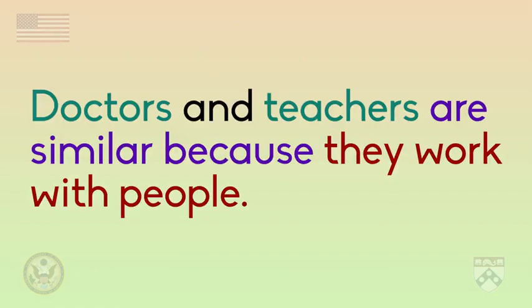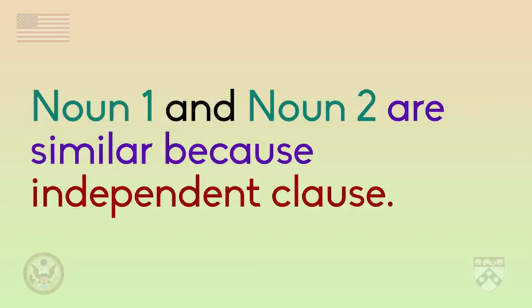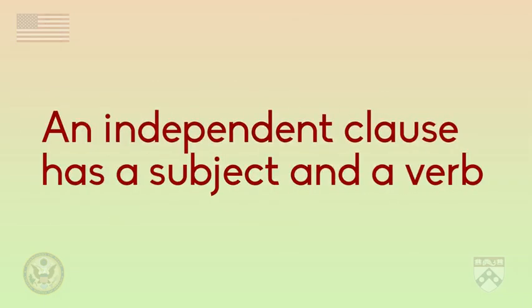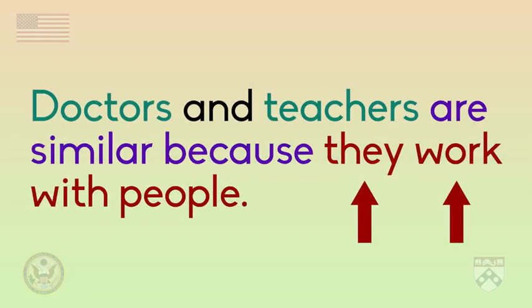Doctors and teachers are similar because they work with people. The two nouns being compared are doctors and teachers, shown in green. Then you see the phrase 'are similar because,' in purple, followed by the independent clause 'they work with people.' An independent clause is a complete sentence that has a subject and a verb. In this example, the independent clause has a subject, 'they,' and a verb, 'work.'